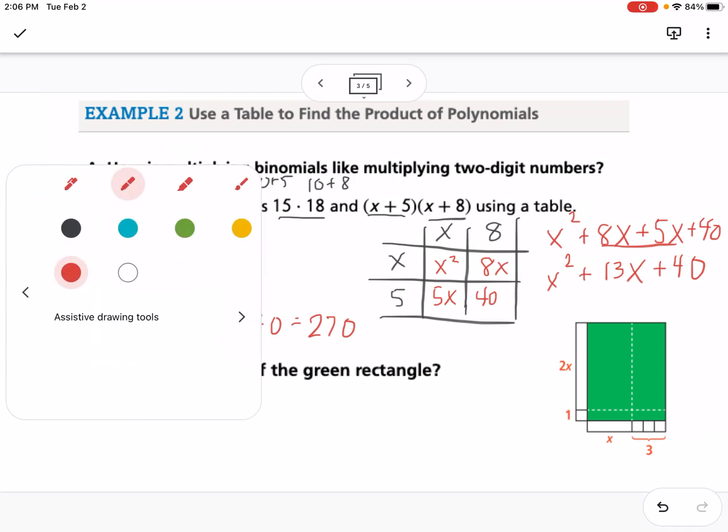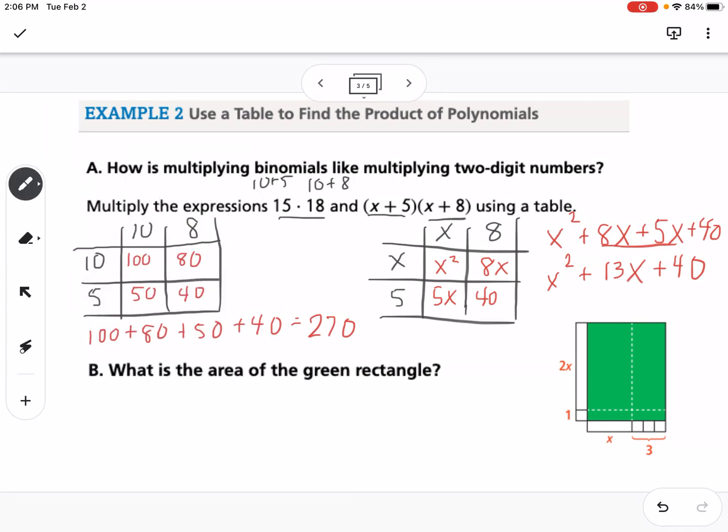Now down below, it says, what is the area of the green rectangle? You can see that the length is 2x plus 1, and the width is x plus 3. So I'm going to do that again as a table. We can say 2x plus 1 and x plus 3.